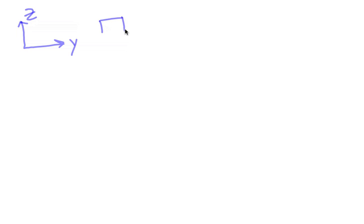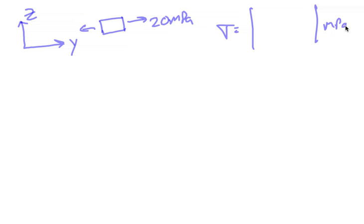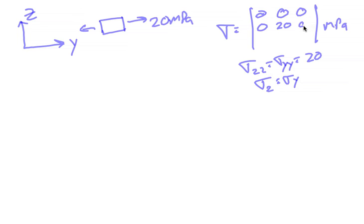I'm going to define a coordinate system up here — the yz coordinate system. We're going to define a little element in the yz coordinate system. We're going to define a stress of 20 MPa acting in that direction on our little element, pulling it in that direction. That's the only stress we have. From that, we can write a stress tensor. The middle value will be 20 — that's sigma_22 or sigma_yy equal to 20. The other stresses are all zeros because we only have a uniaxial tensile stress applied in the y direction.